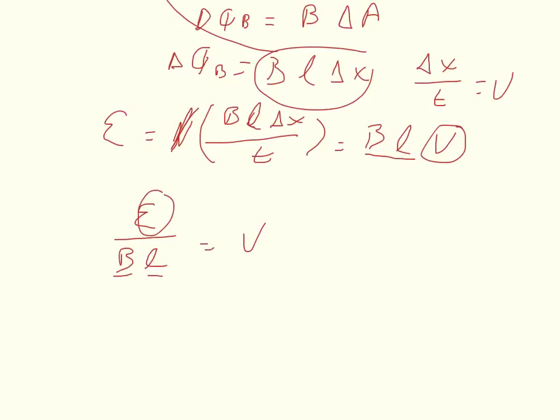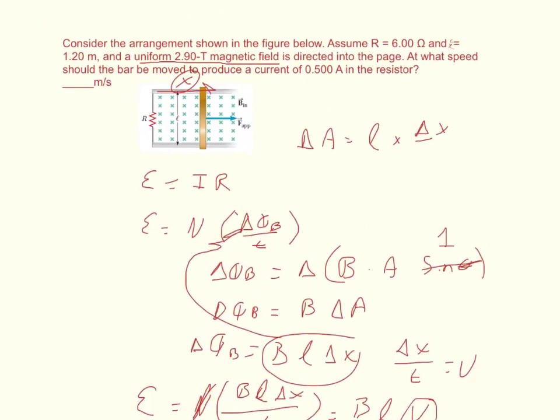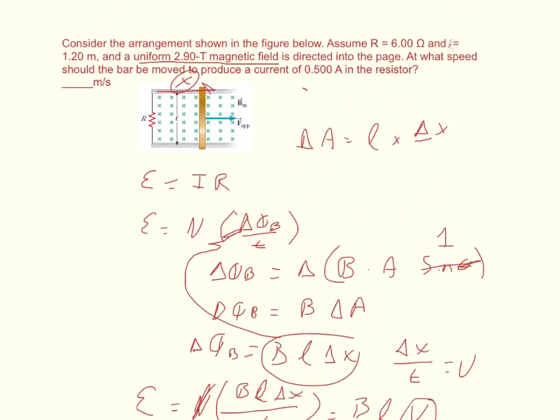So I got to go back to the very first equation, Ohm's law. E is equal to I times R. I can substitute because I am given the current and the resistance. So I can say that the velocity is going to equal the current times the resistance over the magnetic field times the length. And when I plug that in to my equation, I get 0.82069 meters per second.